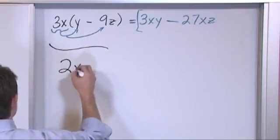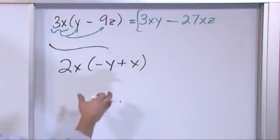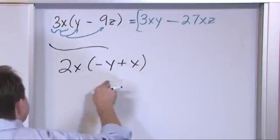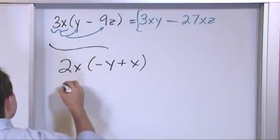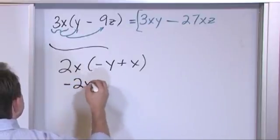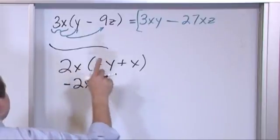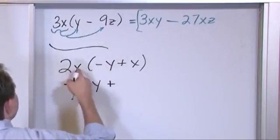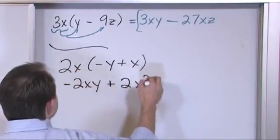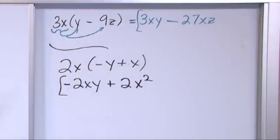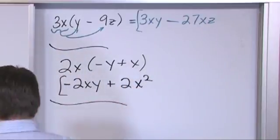What if you have 2x times (negative y plus x)? You can't do anything on the inside, so just distribute. Two x times negative y gives negative 2xy — the negative comes out. Then two x times x: two comes down, and x times x gives x squared, so we get 2x squared. The answer is negative 2xy plus 2x squared.